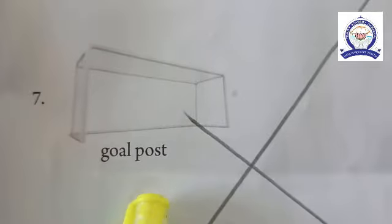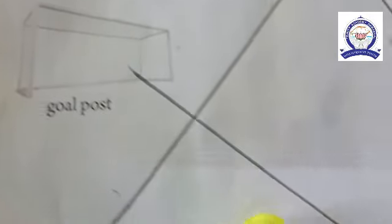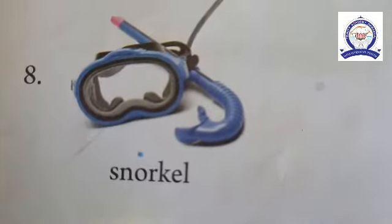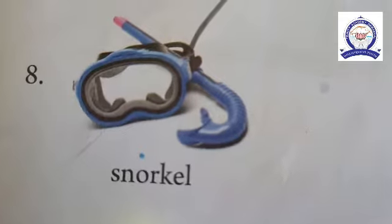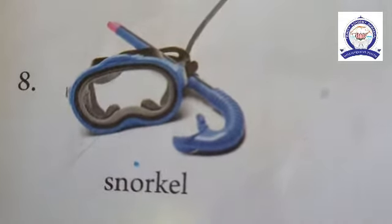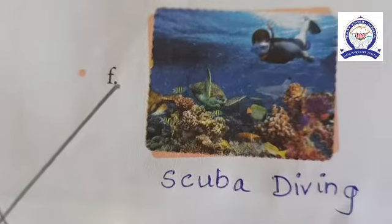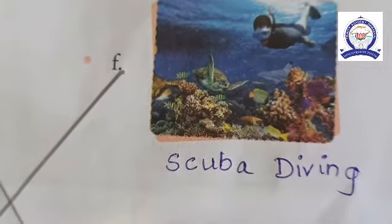The seventh one is a goal post. A goal post is related to football. The eighth one is a snorkel. A snorkel is related to scuba diving.